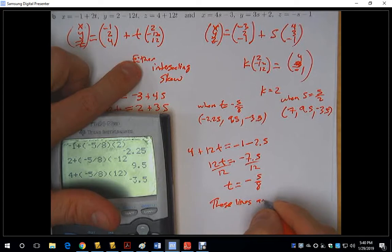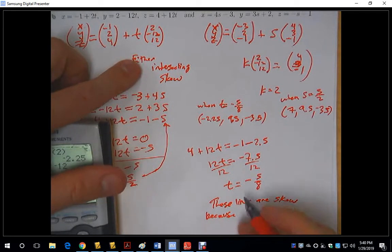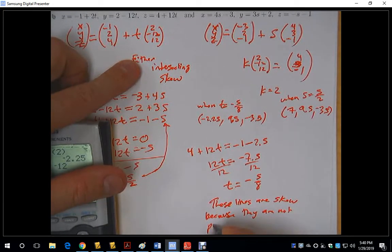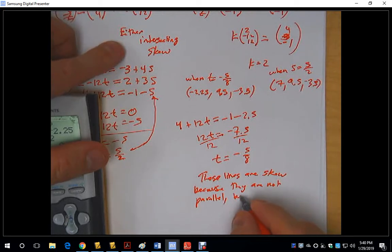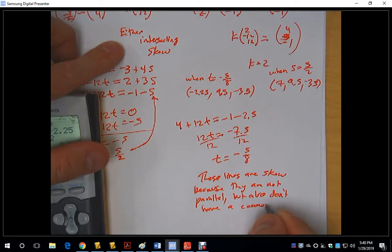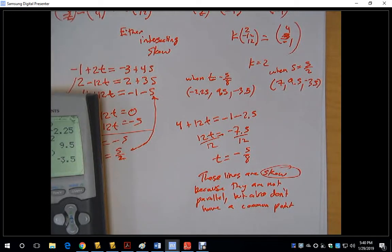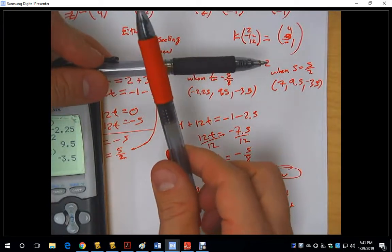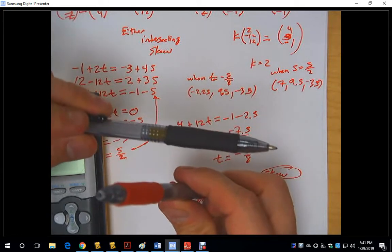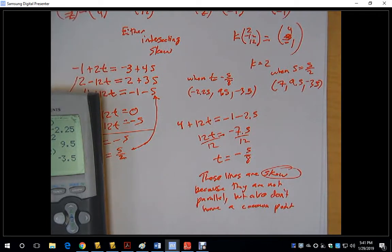We conclude that these lines are skew, because they are not parallel but they also don't have a point in common. If you recall what skew means: you have two lines that look like they might be parallel in three-dimensional space, but if you were to rotate the image you'd see that those two lines do not intersect — they are not parallel and they do not intersect.